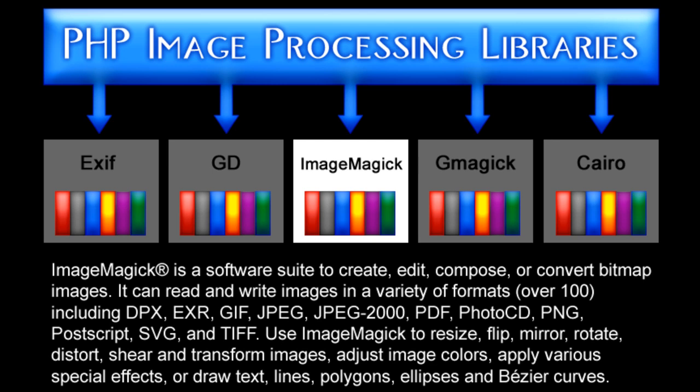ImageMagick is a software suite to create, edit, compose, or convert bitmap images. It can read and write images in a variety of formats, including all those different formats you see right there. Use ImageMagick to resize, flip, mirror, rotate, distort, shear, and transform images. Adjust image colors, apply various special effects, or draw text, lines, polygons, ellipses, and bezier curves.